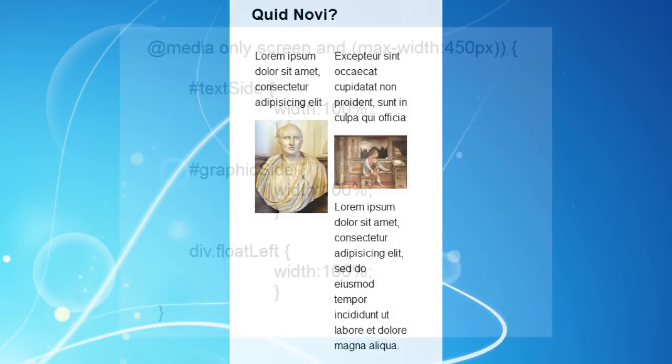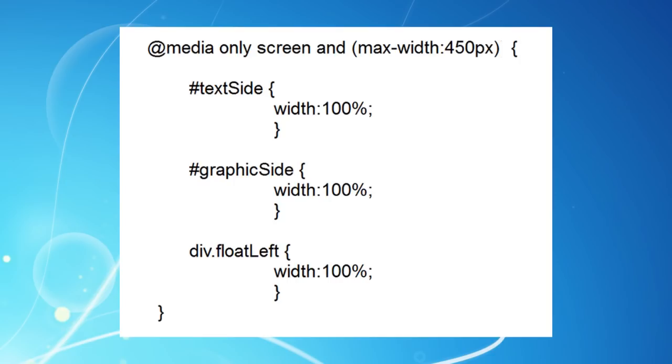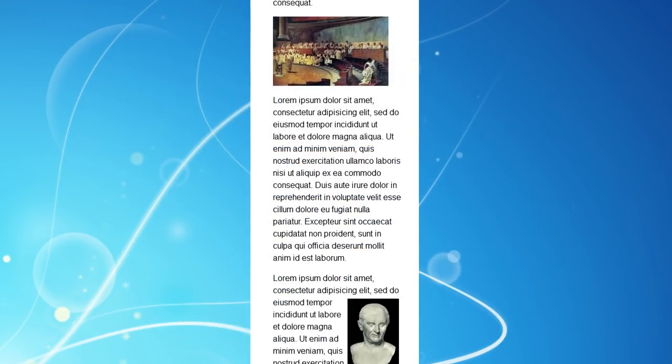So we need to add one more media query at the foot of our style sheet. Now anywhere below 450 pixels, we shall allow the images in graphic side to sit on top of one another again. And we do this by changing the floatLeft width to 100%. So now it's the same size as all the other divs.